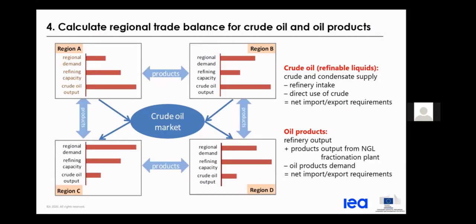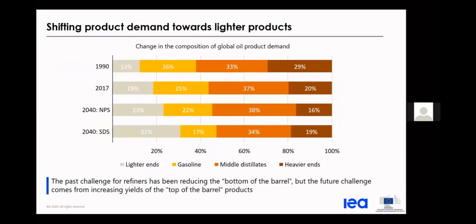These are taken into a regional trade balance for all crude oil and oil products, looking at trade matrices and how trade can move between regions. On the crude oil or refinable liquid side: take crude and condensate supply, subtract refinery intake, subtract direct use of crude — that equals net import and export requirements. For oil products: take refinery output, include product output from NGL fractionation plants, subtract oil products demand — and this gives net import and export requirements. These are done on a regional basis to assess the overall global crude oil and product market.